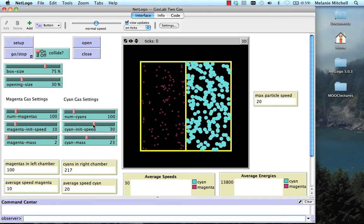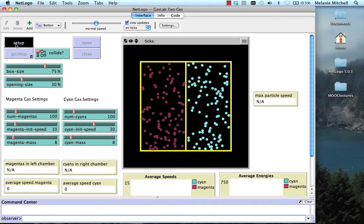The initial speed will be 30 for the right and 10 for the left. And I'll have them each have mass 8. Okay, this will all make it a lot simpler. Okay, so we'll do setup.